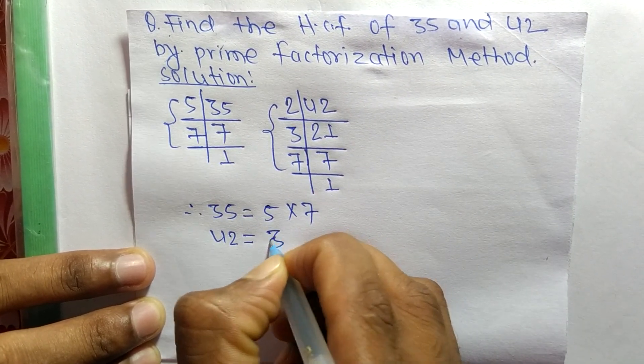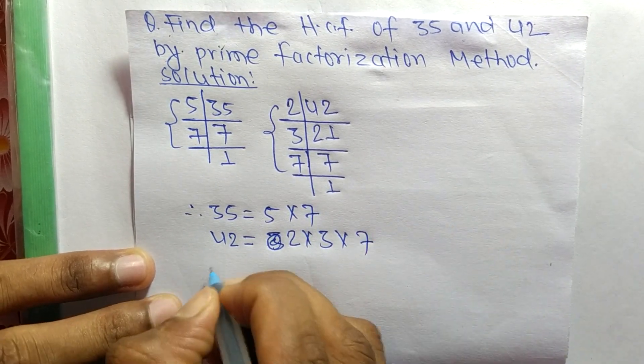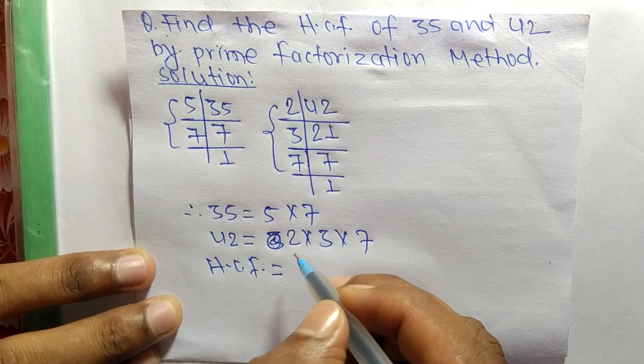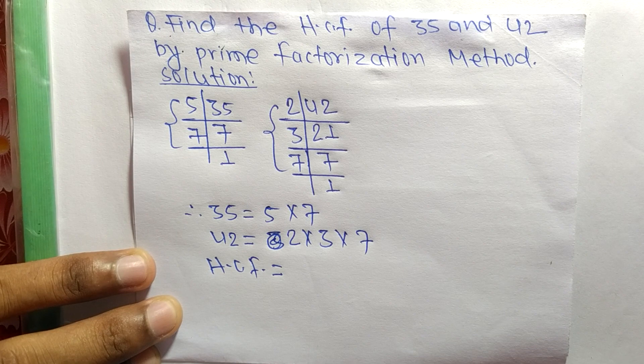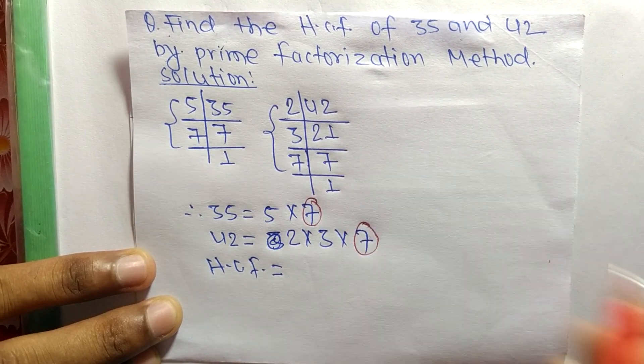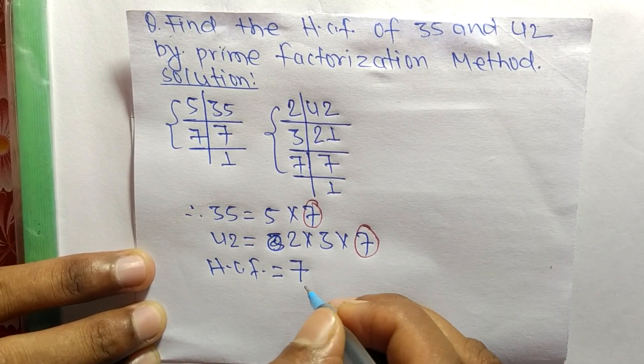It is 2 into 3 into 7. So HCF is equal to... now we have to find out the common factors in these prime factors. The common factor here is 7, so HCF is equal to 7.